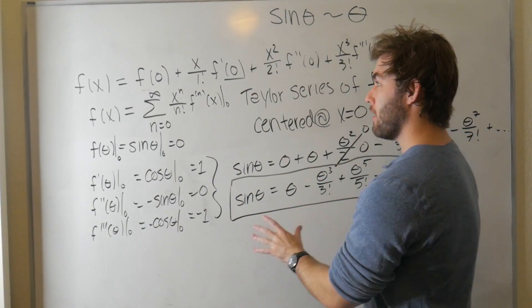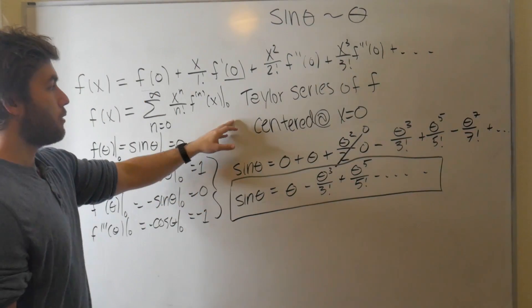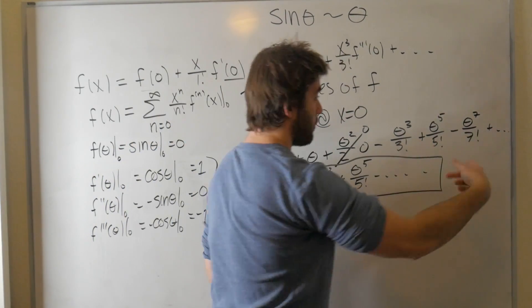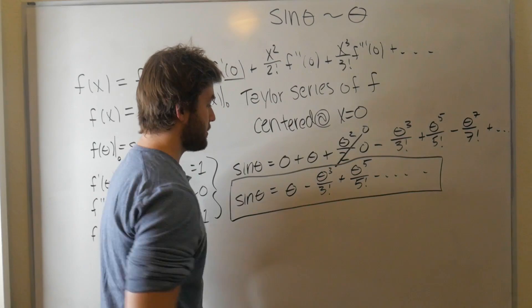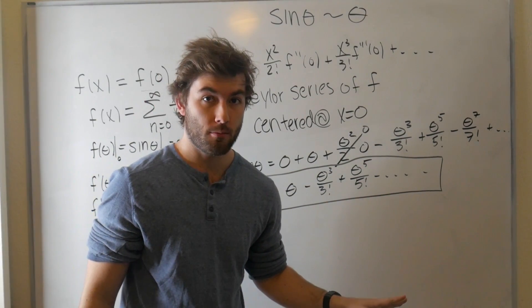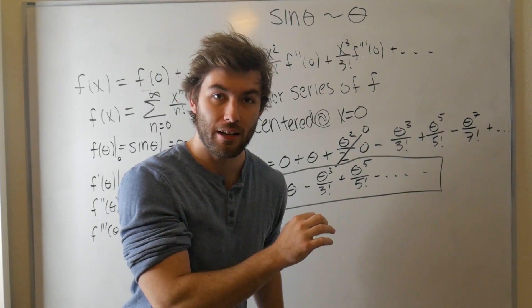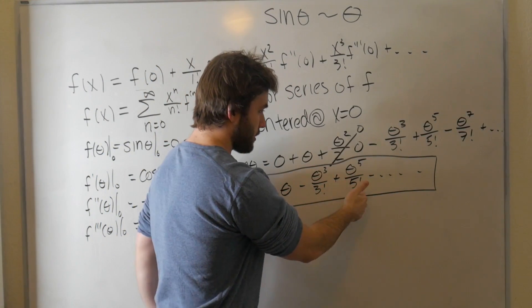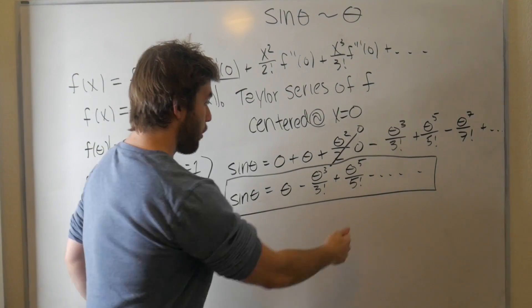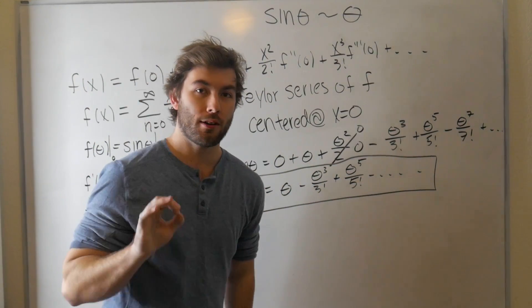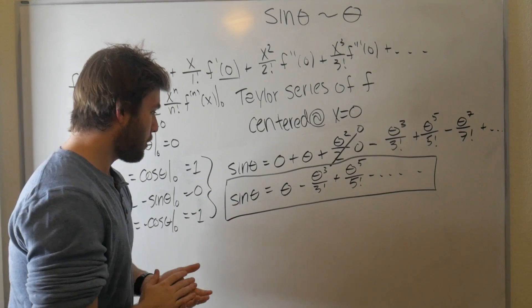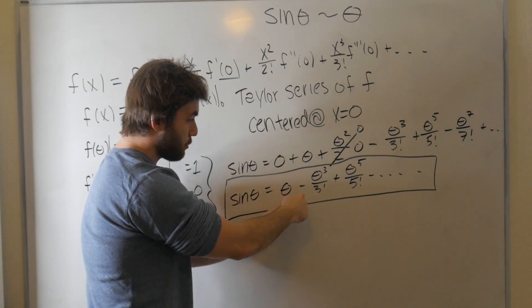We have our final Taylor series expansion for sine of theta. It's equal to theta minus theta cubed over three factorial plus theta to the fifth over five factorial dot dot dot. If you skipped to this part, all we showed is that through the Taylor series, we could express sine of theta as this polynomial that has an infinite number of terms where we have this pattern plus, minus, plus, minus, and we increase by powers of two. You need all infinite terms for it to perfectly match sine of theta.